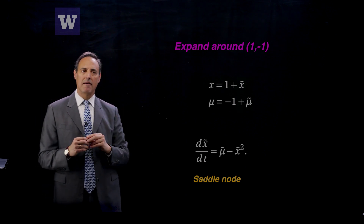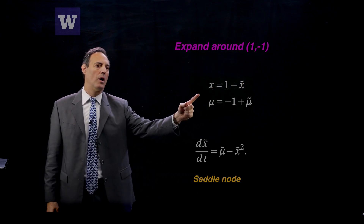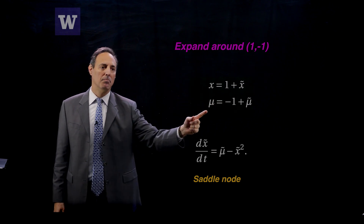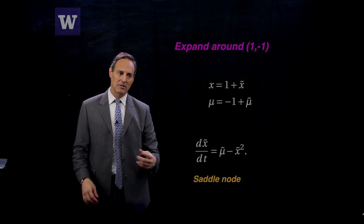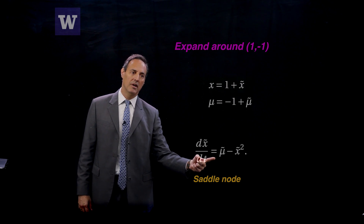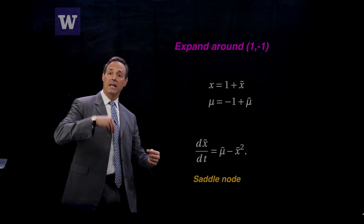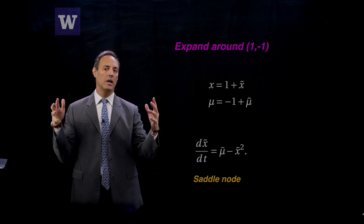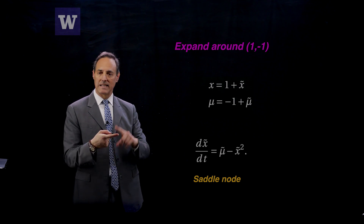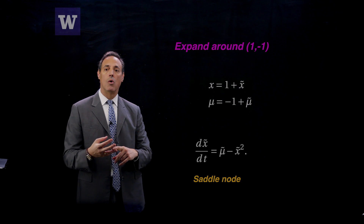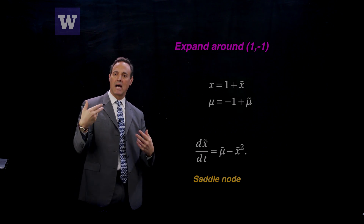I can also expand around that fold point, which was at x = 1, μ = -1. Expanding nearby — x = 1 + x̃, μ = -1 + μ̃ — and keeping only the dominant balance terms gives: dx/dt = μ̃ - x̃². Those are the dominant terms, and this is a saddle node bifurcation. So when I do these expansions of this more complex differential equation near each of the bifurcation points, it always comes down to one of those normal forms — whether saddle, pitchfork, transcritical, or Hopf. That's why they're called universal unfoldings: when I do an asymptotic analysis near the bifurcation point, it comes out in one of these canonical forms.